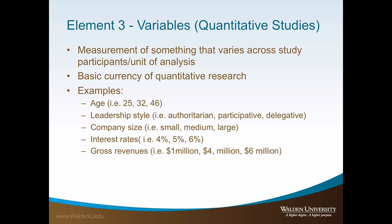As mentioned earlier, quantitative purpose statements require the inclusion of the variables. A variable is a measurement of something that holds at least two distinct values across participants or units of analysis within a study. Another definition of a variable is that it is an entity that can take on different values. Variables are considered the basic currency of behavioral research, and the list of examples below depicts some possible variables in a study.